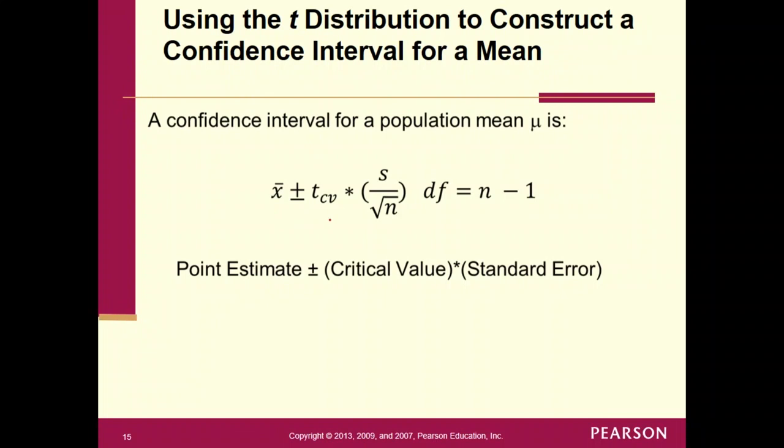It's x̄ plus or minus—remember, our critical values are coming from the t-table—and then you got your standard error. So there's your point estimate, the value of x̄. Your critical value is coming from the t-table. So this value right here will be coming from the t-table, and it's not going to be 1.645, it's not going to be 1.96. It's got to come from this t-table with degrees of freedom of n minus 1, and then here's your standard error, s divided by the square root of n.